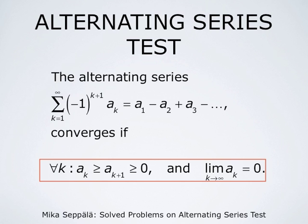If these numbers satisfy that ak is greater than or equal to ak plus 1 for all k, and if the limit of these numbers is 0, then the alternating series summation k from 1 to infinity of negative 1 to the power k plus 1 times ak converges. So convergence happens under some rather general conditions.